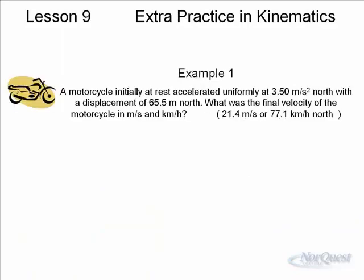The first example is a fairly simple one involving a motorcycle initially at rest, so you know vi is zero. It accelerates uniformly, a is 3.5, 65.5, that's d. And then they're asking what is the final velocity in both meters per second and kilometers per hour. The answers are there for you, and you can try this. Once you've gone through this example, you can look at your WebCT, and the solution to this particular problem will be recorded as an attachment to lesson number nine.